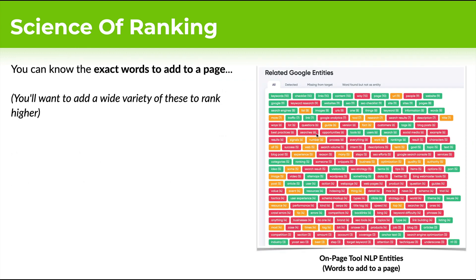We can know the exact words to add to a page to increase their relevance. These are called Google entities, and you're going to want to add a wide variety of these to rank. Here on the right-hand side, you can see the ones in green — we already have those. The ones in red are not there at all, and the ones in yellow are there but not recognized as entities. This is one of the features of the OnPage.ai tool: you can know exactly which words are missing and which ones you should add to your page.